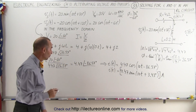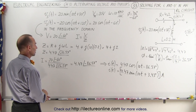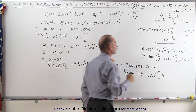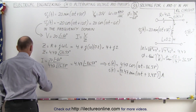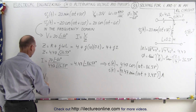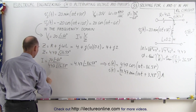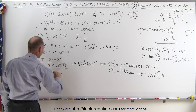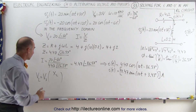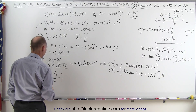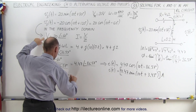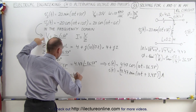Now we need the voltage as a function of time — specifically the voltage across the inductor, so we're going to use a voltage divider. The voltage across the inductor equals the source voltage times the ratio of the inductive reactance divided by the total impedance. We plug in the source voltage: 20 at a phase angle of minus 60 degrees.